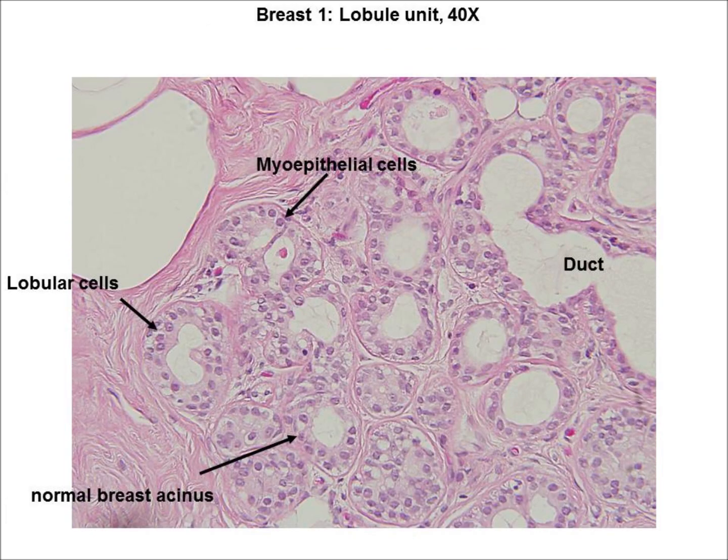This is a higher-power view of a lobule showing the ducts and glands. As indicated previously, it is shaped much like a bunch of grapes, and each individual spherical structure is termed an acinus. At this magnification, you can see that the normal breast acinus is lined by a layer of lobular cells — you can tell this by the fact that the nuclei are just one layer thick. Also note the presence of myoepithelial cells at the base of the lobular cells. These cells have flattened nuclei and are located just above the basement membrane. These myoepithelial cells have contractile properties and are important for diagnosing carcinomas. The absence of myoepithelial cells is indicative of a carcinoma.